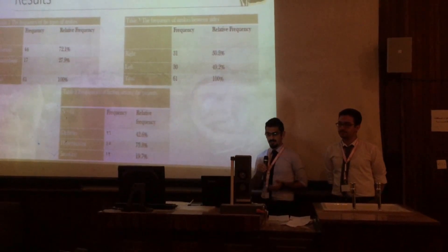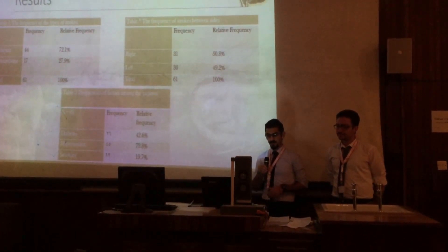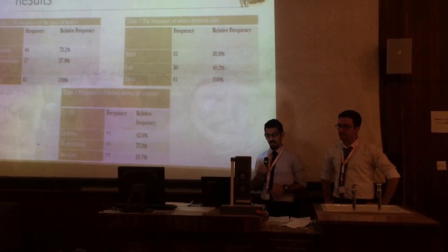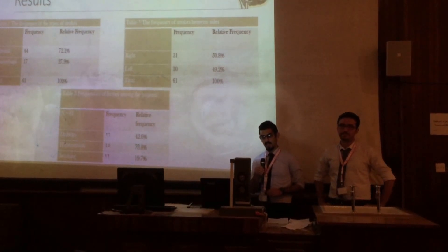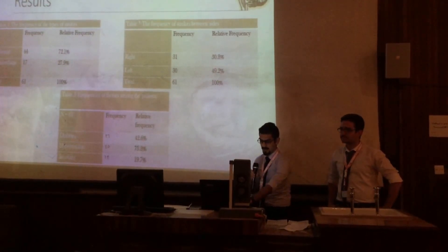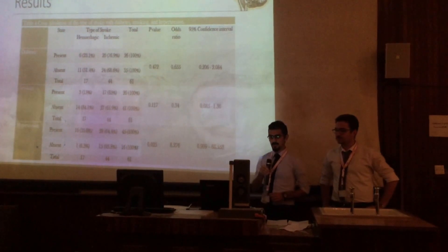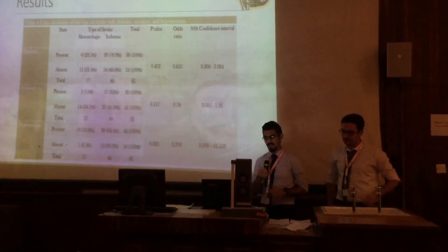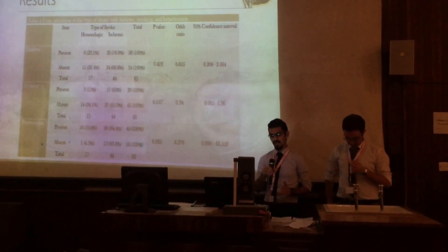Regarding the frequency of the factors studied, 42% of the sample were diabetics, 73% were hypertensive, and 19% were smokers. Now I will discuss the association between the type of stroke and diabetes, smoking, and hypertension.